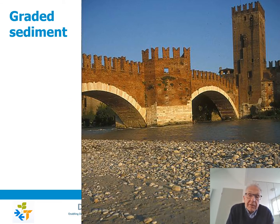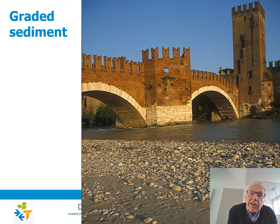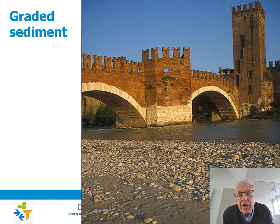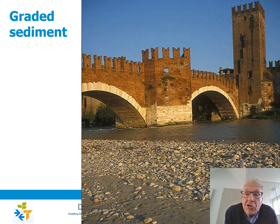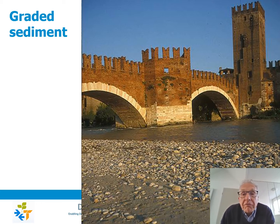River morphology is not only a matter of shape — it's also a matter of bed sediment composition. If we deal with graded sediment, in the sense that the sediment consists of a mixture of different grain sizes, we can have coarse and fine — let's say gravel and sand — and sorting processes can lead to segregation, by which coarser sediment ends up in one place and finer sediment ends up in another place. We can see that in the field.